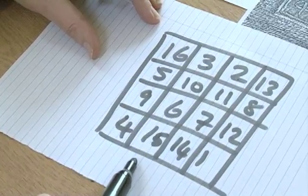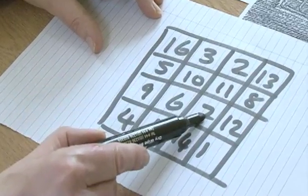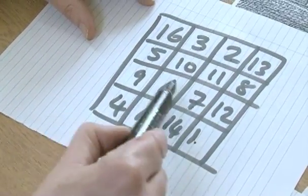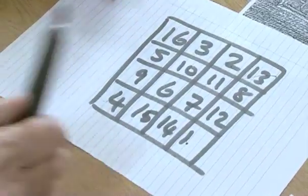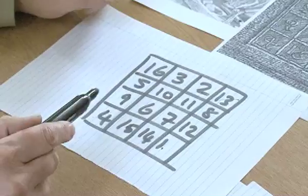That also adds up to 34. And if we look along the diagonals, they also equal 34. We've got a 4 by 4 square here, and we've used the first 16 numbers to fill that square. That's your typical magic square.